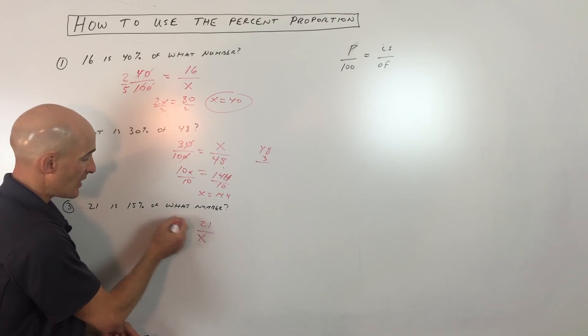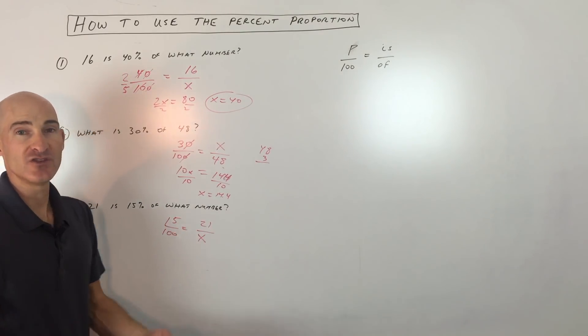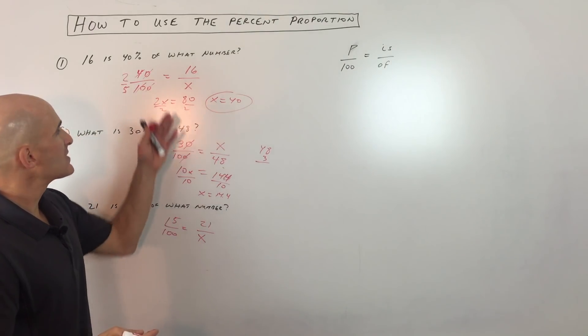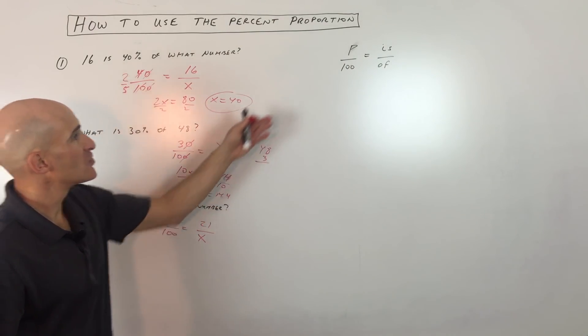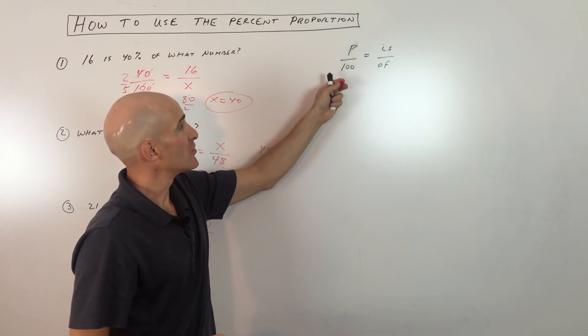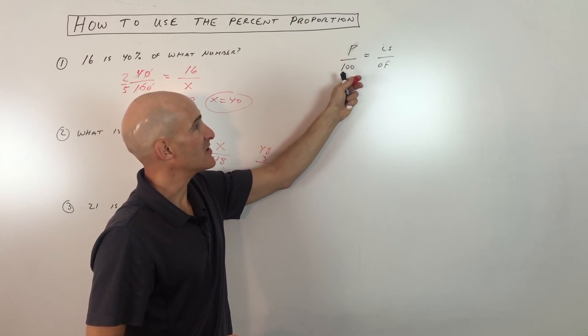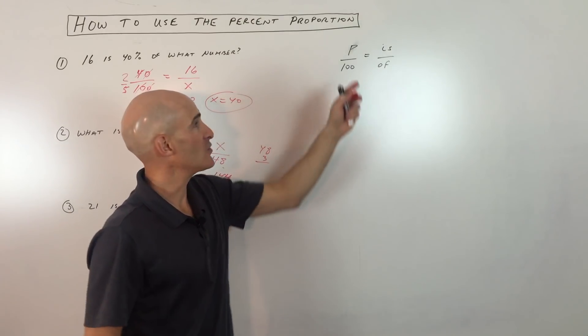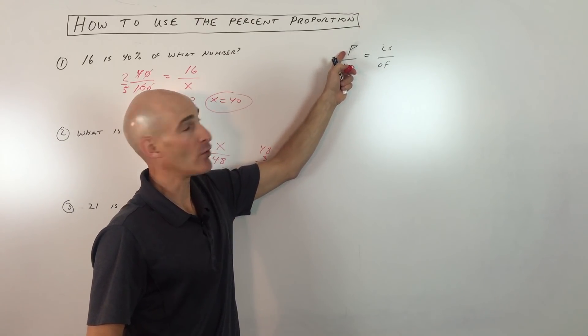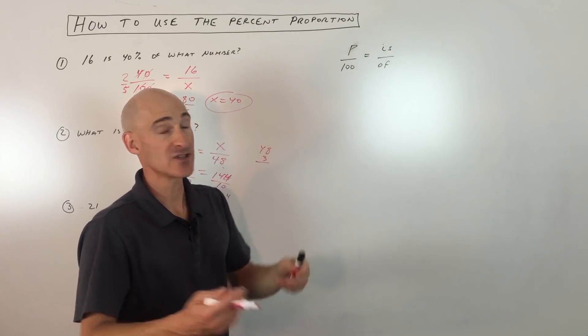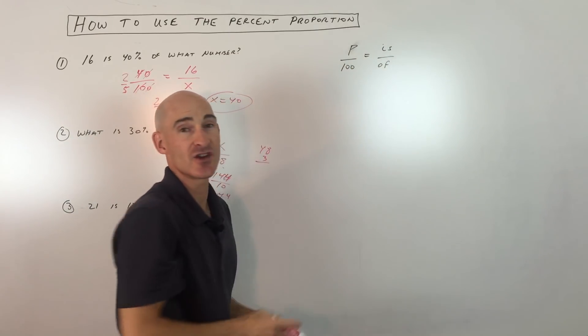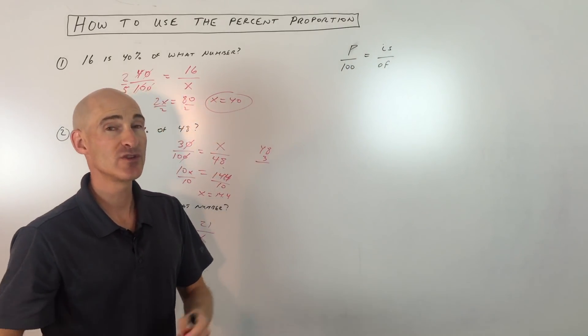So all we have to do is cross-multiply and solve. One example I didn't show is sometimes you can solve for the percentage. They'll say what percent is this number out of this number? You would just leave P as your variable. As long as you know three of the four quantities here, you just have one unknown, you'll be able to solve.